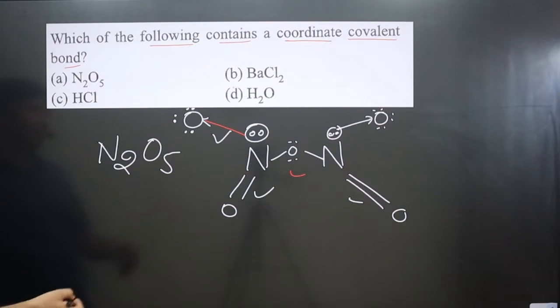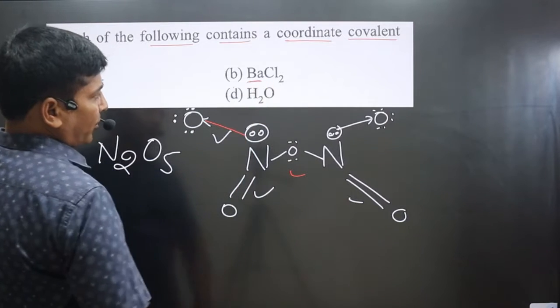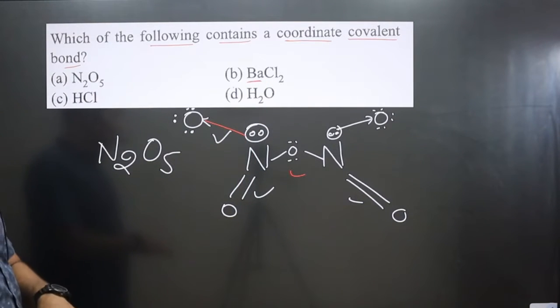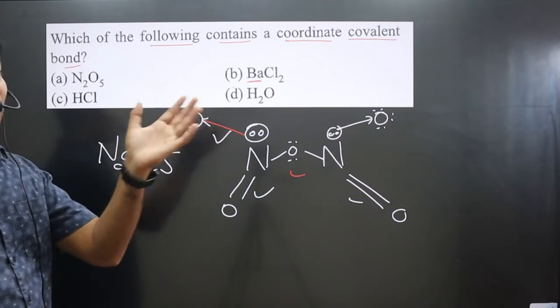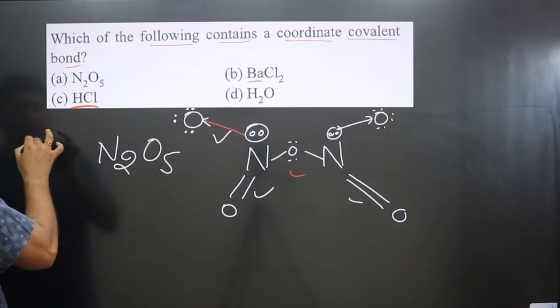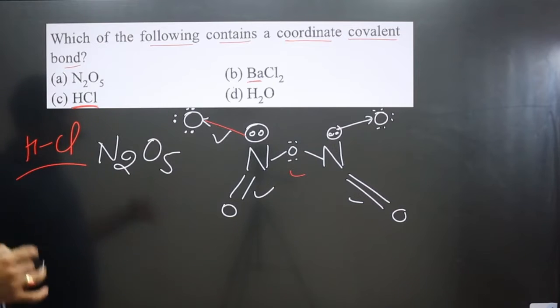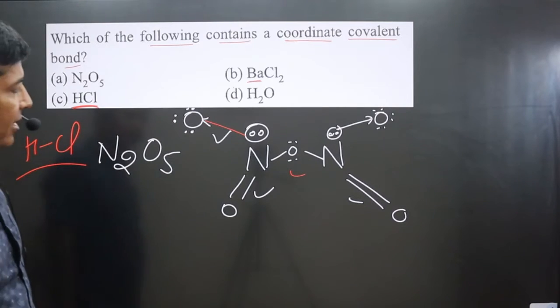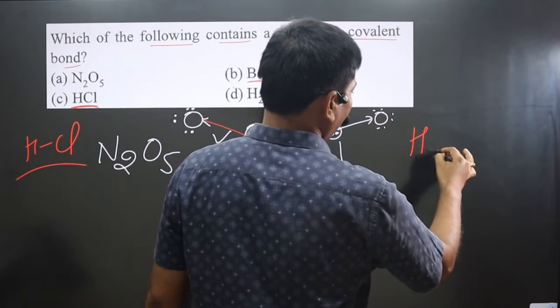If you go for option B, barium chloride is there. Barium is a metal and Cl is a non-metal, so this is ionic. In this case, we have HCl, so we have only covalent bond. Non-metals, so covalent bond is there.